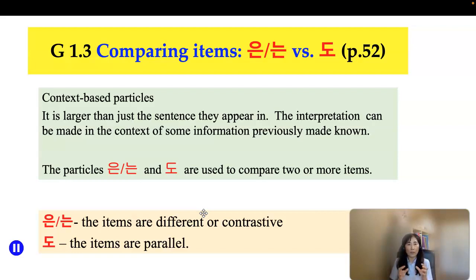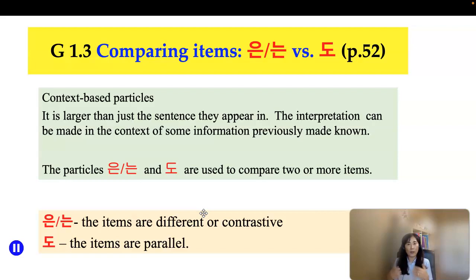The particle 은/는 indicates that items are different or contrastive. While particle 도 is completely opposite — 도 indicates items are parallel, where you have something in common compared to the previous item. So it's a concept that's a little bit different.